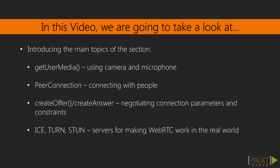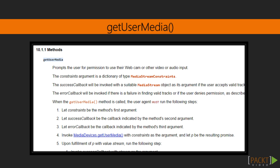WebRTC provides a JavaScript API — an abstraction layer for reaching media and connecting to other peers in order to send data and media streams. The first main function we will look at is obtaining media streams from your camera, microphone, and screen. These streams can be accessed using GetUserMedia, which is the first method we will study.